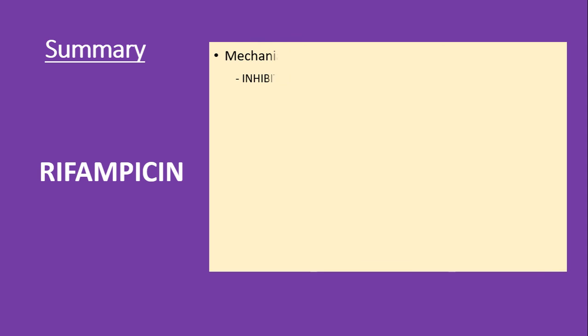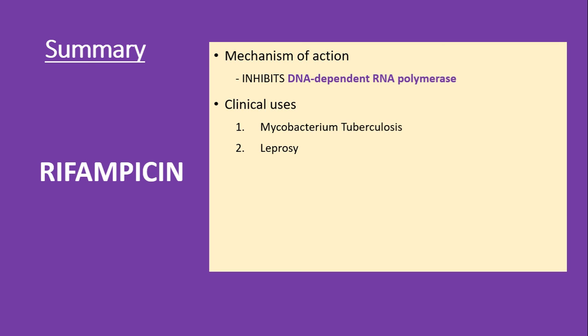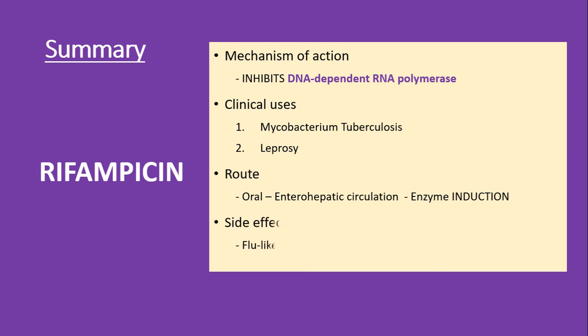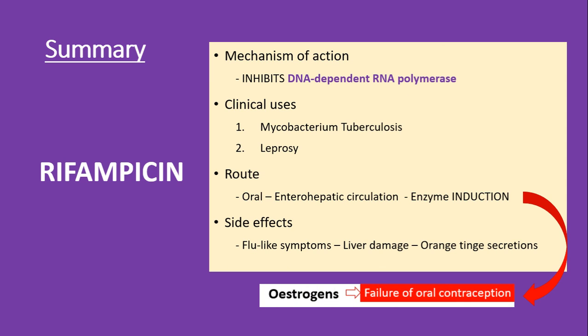In summary: the mechanism of action of rifampicin is inhibition of DNA-dependent RNA polymerase. Clinically it is used in the treatment of Mycobacterium tuberculosis and leprosy. It is administered through the oral route, undergoes enterohepatic circulation, and has potent enzyme-inducing properties which can lead to many drug interactions. Side effects include flu-like symptoms, liver damage, and orange-tinge secretion. An important point is that rifampicin given along with estrogen reduces estrogen concentration due to increased metabolism, leading to oral contraceptive failure.